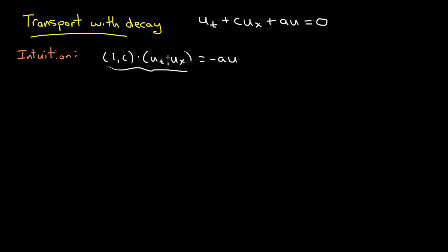If this were just an ordinary derivative, like du/dt equals minus au, that would describe exponential growth or decay depending on the sign of a. I'll assume here that a is positive, so it would be exponential decay. So this is a directional derivative, which is not that much different than an ordinary derivative. What this is describing is exponential decay in the direction of (1, c) — it's a directional derivative proportional to u.